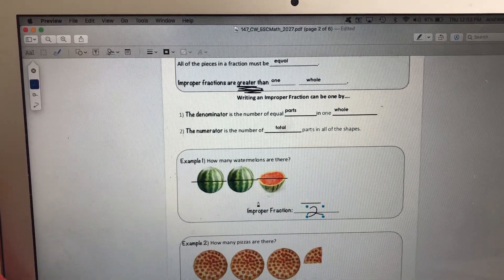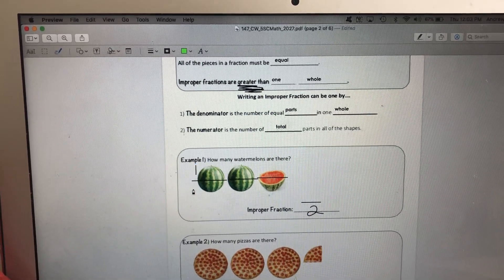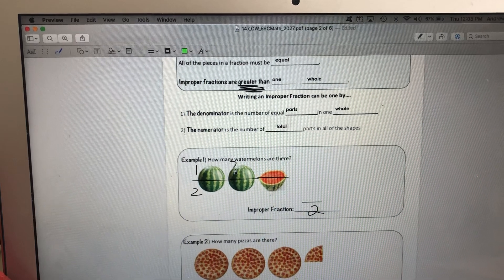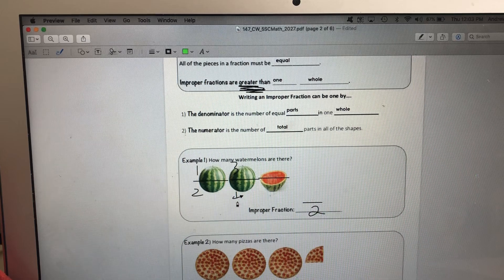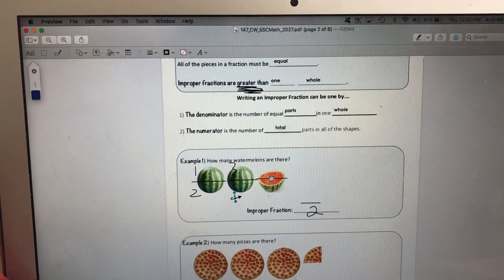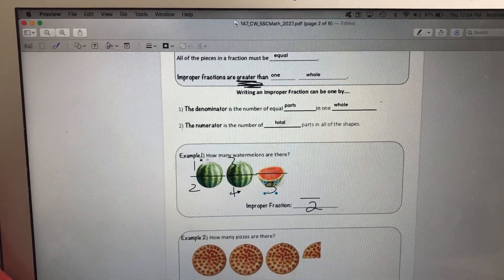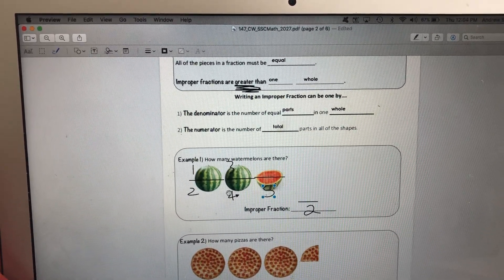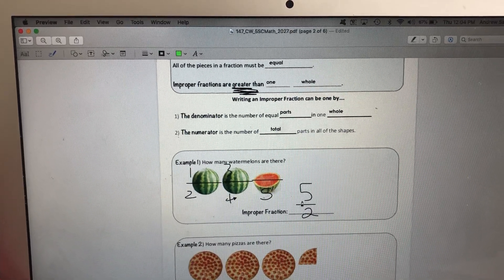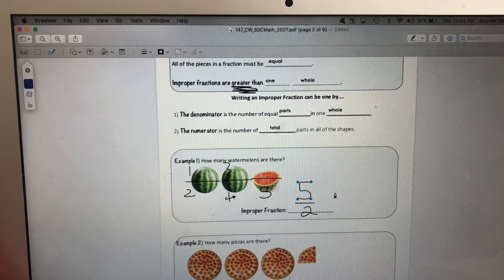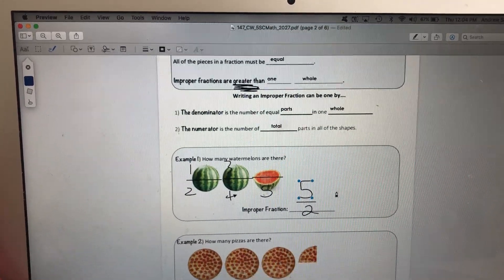But for the numerator, I count up all three shapes. So I have one part, two part, three, four, and five. I have five parts here on my watermelons. So my fraction can be written as five halves. I have more than one whole watermelon. I actually have five halves.